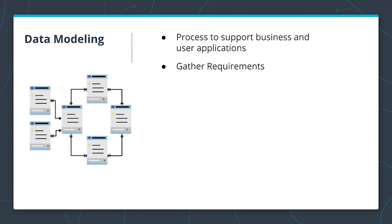To begin a data modeling process, the team must gather requirements from the application team, the business users, and our end users to understand what data must be retained and served to the business or the end users. First, we need to map out what data must be stored and persisted and how that data will relate to each other. Next, we want to focus on conceptual data modeling. Our process of doing actual data modeling starts with conceptual data modeling with entity mapping.